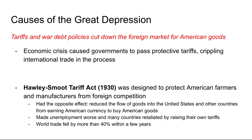The Hawley-Smoot Tariff reduced the flow of goods into the United States and prevented other countries from earning American currency to buy American goods. For example, a British company couldn't sell goods in the United States to earn dollars and then use those dollars to buy American goods — it basically eliminated realistic foreign trade. It made unemployment worse, and many countries retaliated by raising their own tariffs. At the end of the day, world trade fell by more than 40% within a few years.